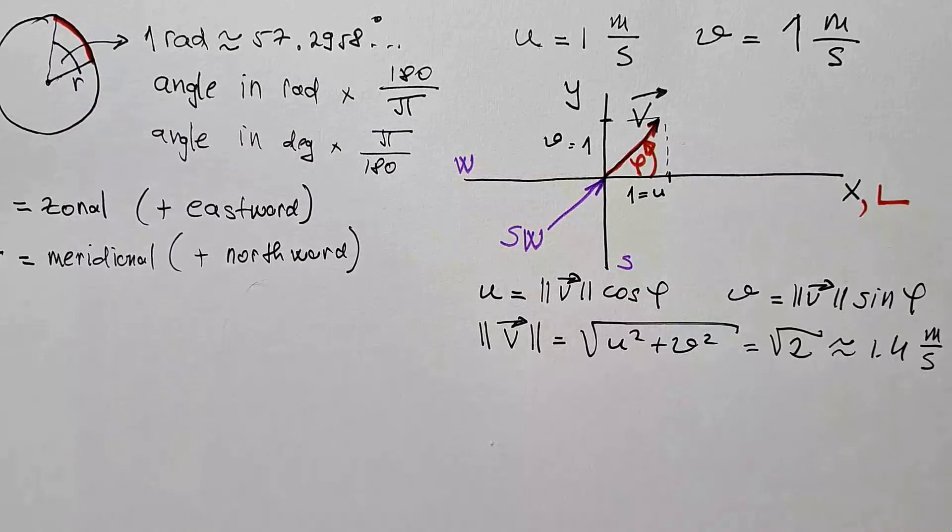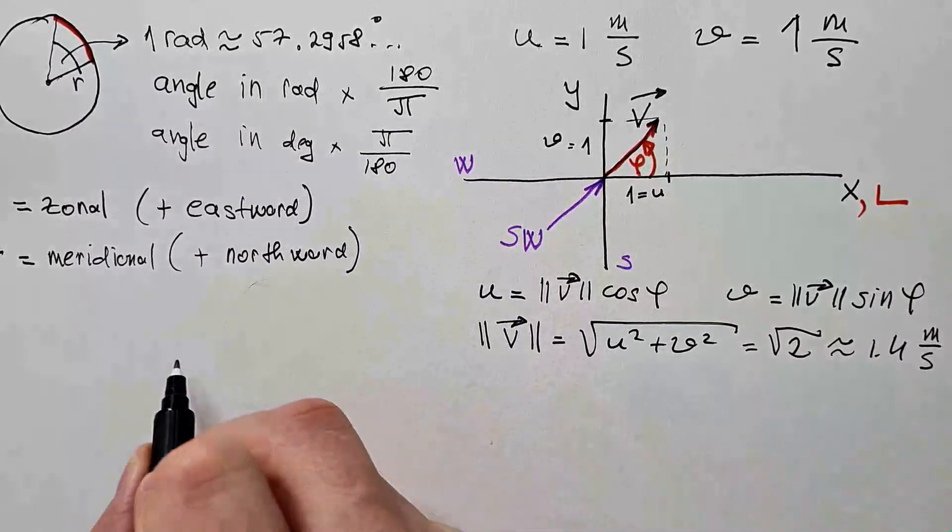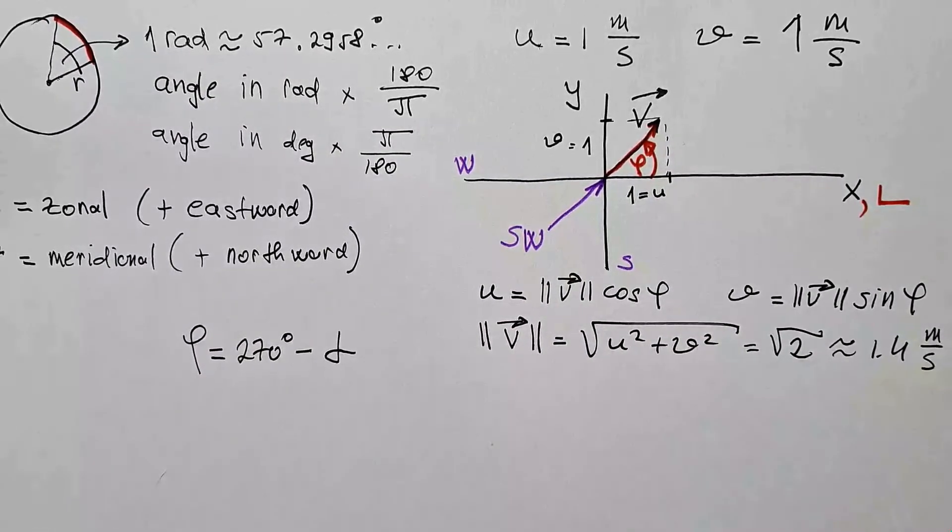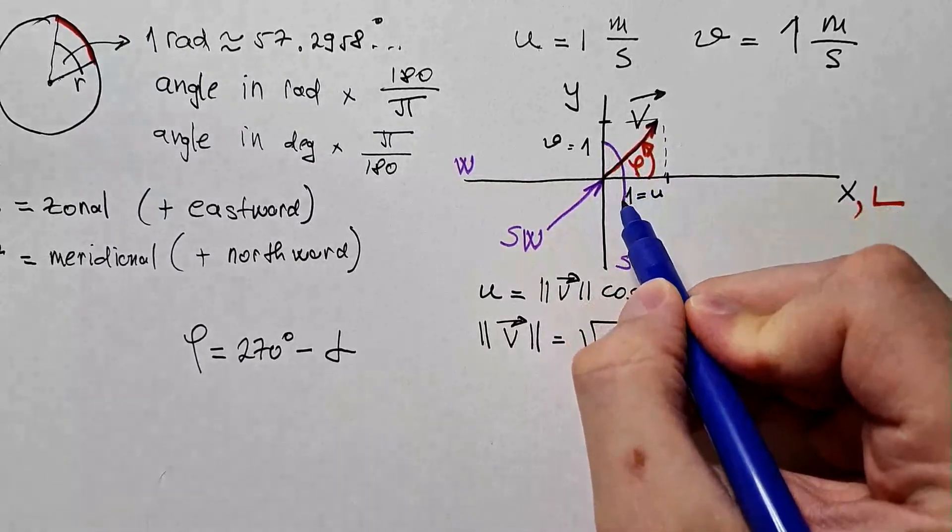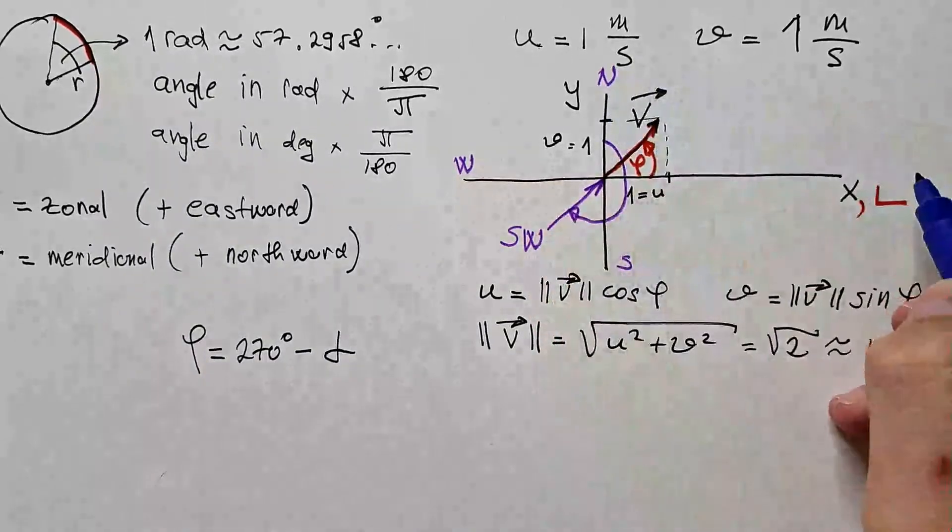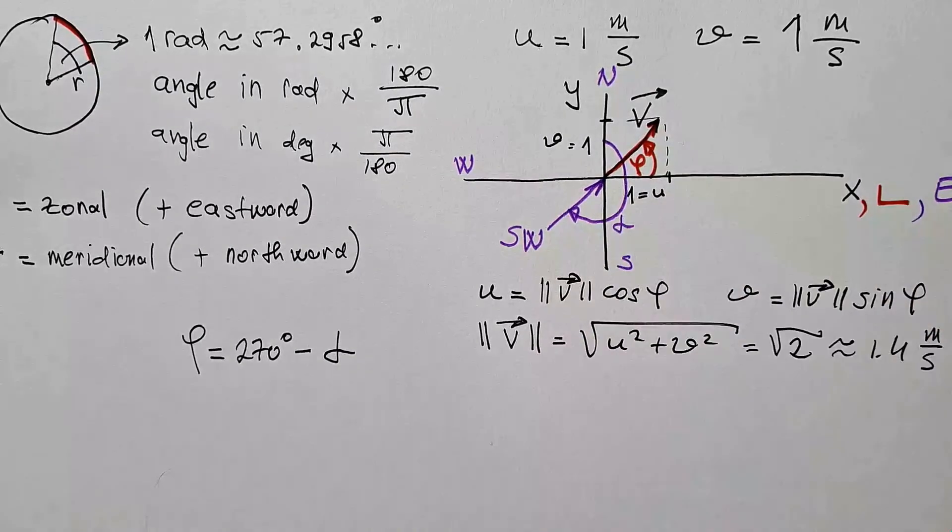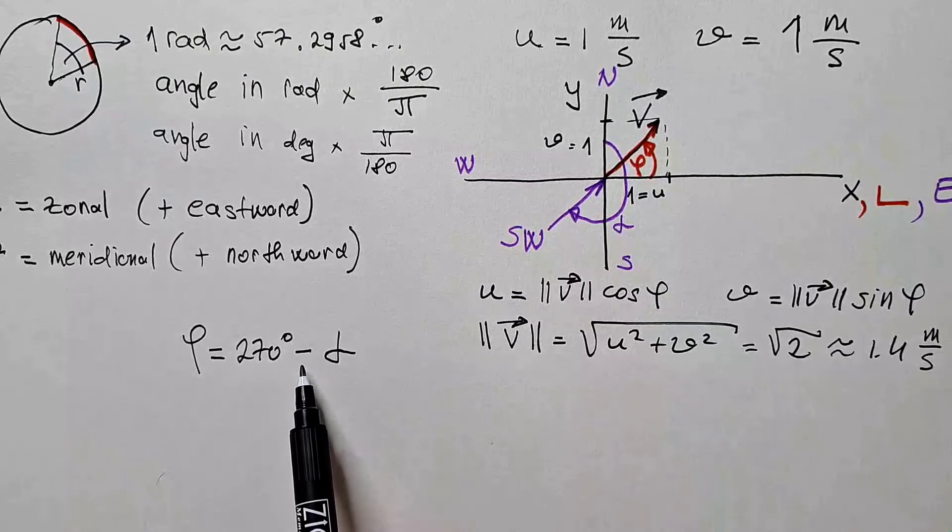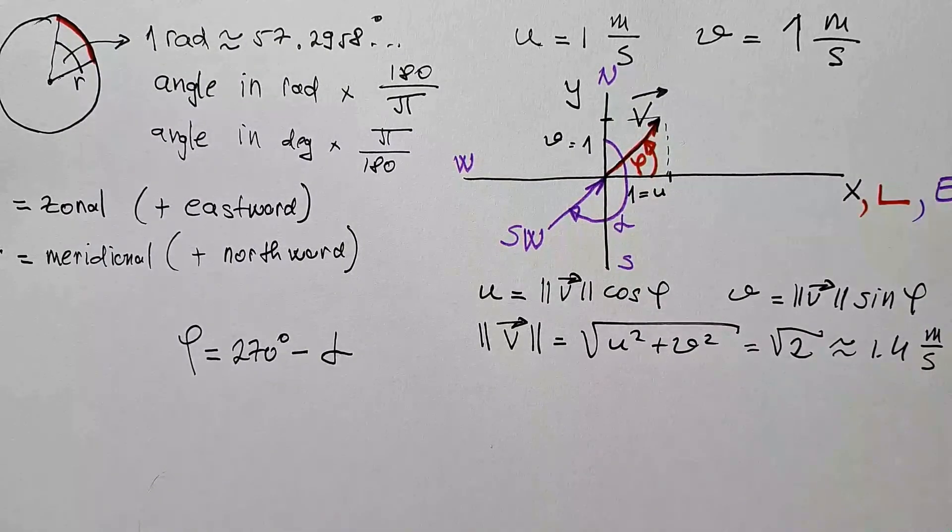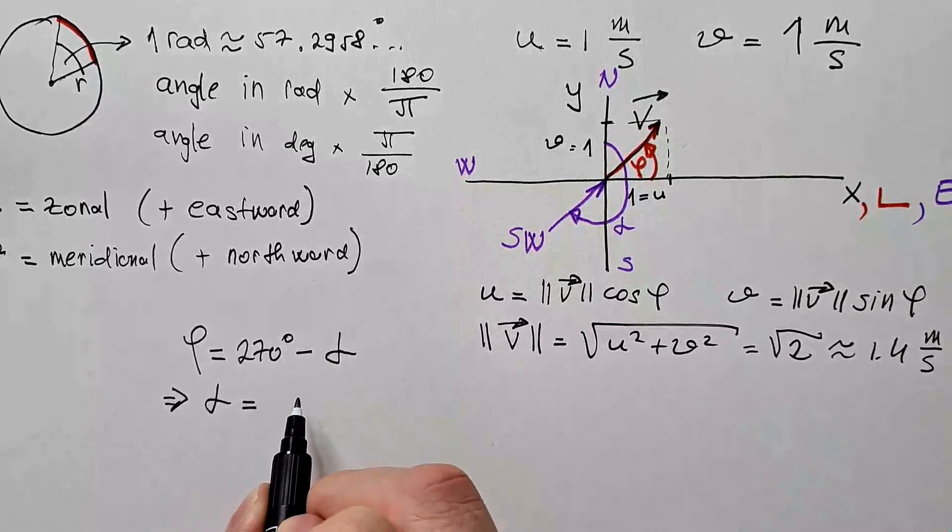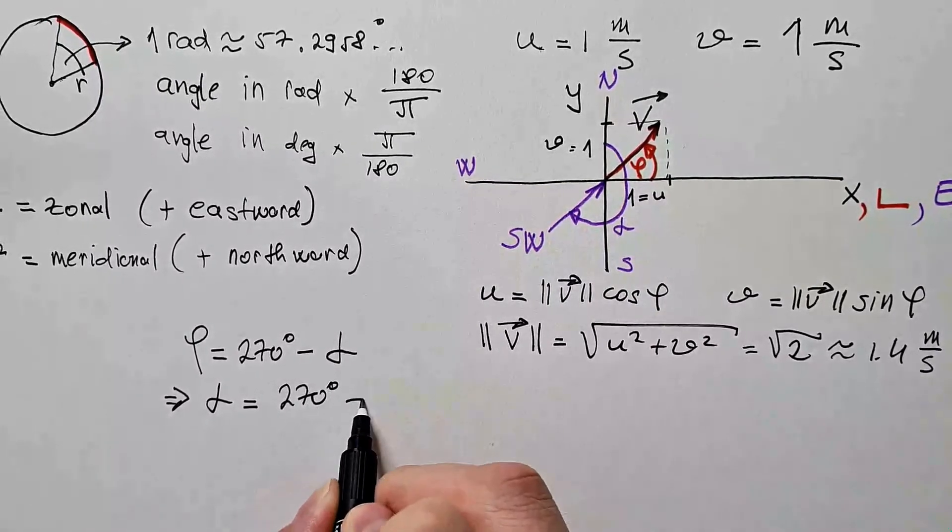You will recall from my previous video that polar angle phi is equal 270 degrees minus alpha, where alpha is wind direction measured clockwise from north. This is north, and this is east. So this is angle alpha. And you will also remember that if the result of this simple equation is negative, then add 360 degrees, so you get angles in the range between 0 and 360. From here, we have that alpha is equal 270 degrees minus phi.